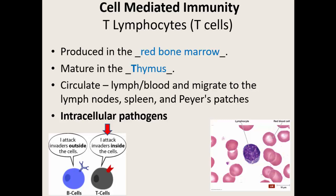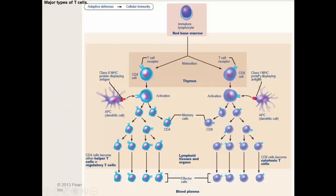These cells are specifically looking to attack anything that gets inside of our cells, so they're looking to fight off intracellular pathogens. We have T cells that are specific for about 10 billion different types of intracellular pathogens — they can recognize a lot of different things that may get inside of our cells.